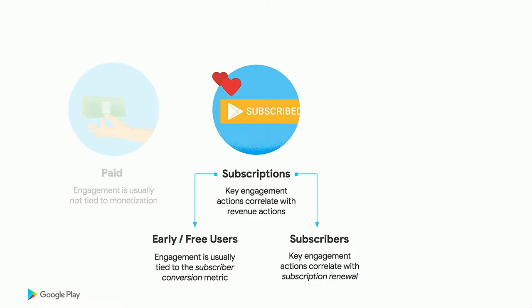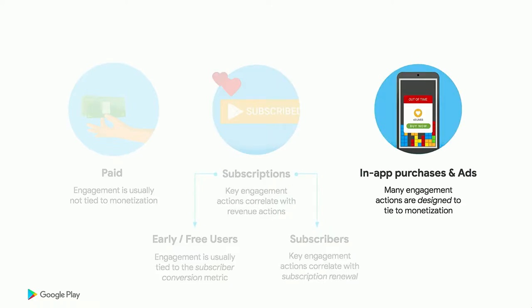On the other side, you have subscribers — they've already seen the value and subscribed. In this case, you want to look at engagement actions that correlate with subscription renewal, showing they're continuing to get value. You'd expect to see sustained or increasing engagement metrics throughout a user's subscription duration. Finally, we have titles using in-app purchases and ads. In this model, certain engagement actions are designed to tie directly to monetization. And as many of you know, games live more within this monetization model.